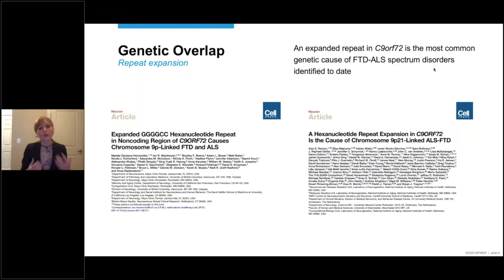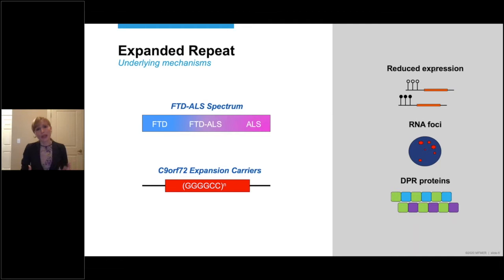In 2011, two papers were published. One study led by Dr. Rosa Rademakers, and another study led by Dr. Brian Trainor. Both studies described the repeat expansion in C9ORF72 as the most common genetic cause of FTD and ALS identified thus far. And even though this discovery was made almost a decade ago, many questions remain unanswered.